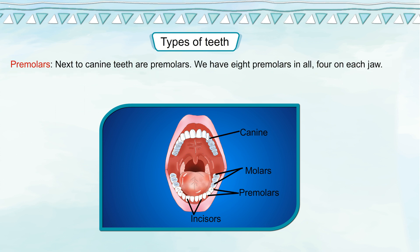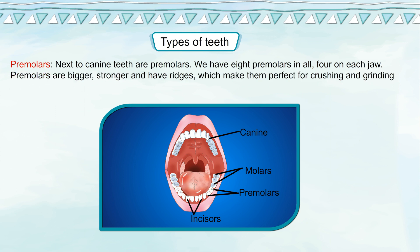Next to the canine teeth are premolars. We have 8 premolars in all, 4 on each jaw. Premolars are bigger and stronger and have ridges, which make them perfect for crushing and grinding food.